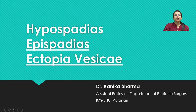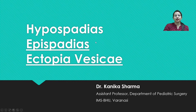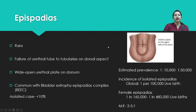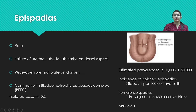Welcome back. After the discussion of hypospadias, we will now discuss the other two topics: epispadias and ectopic vesica. As the name suggests, epispadias implies that the urethral meatus is on the upper surface of the penis — that is, the dorsal aspect. Here you can see a wide urethral plate which is open, with the urethral meatus on the mid-penile area.